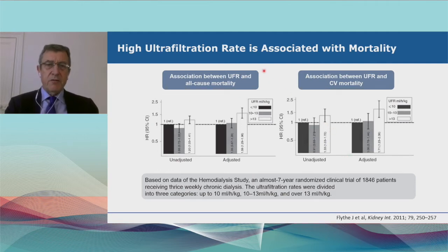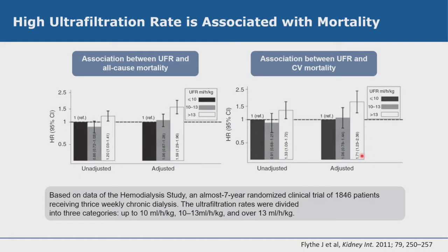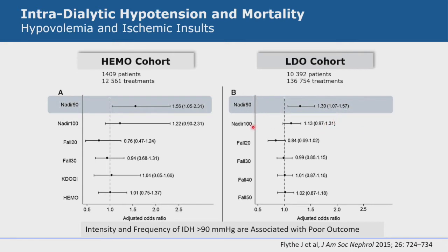Ultrafiltration as part of managing fluid overload is also a risk factor. From the FLI study, we learned that if the ultrafiltration rate exceeds 13 ml per hour per kilogram — almost 750 ml for a 70 kg patient — mortality risk increases by 60%. High ultrafiltration rate is associated with hypovolemia and increased incidence of intradialytic hypotension.